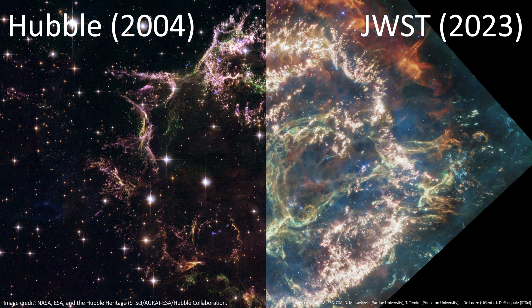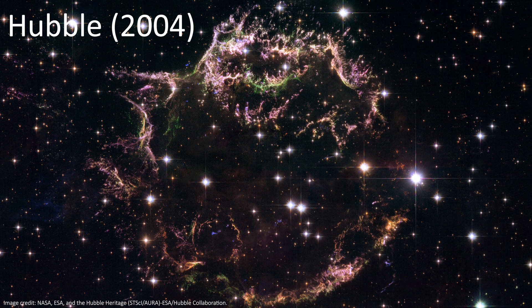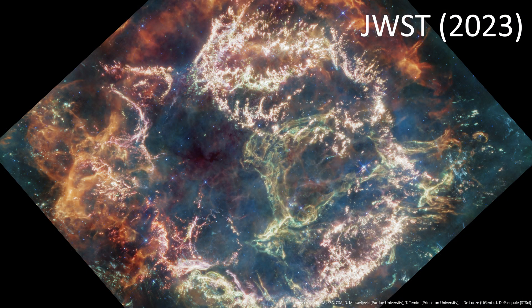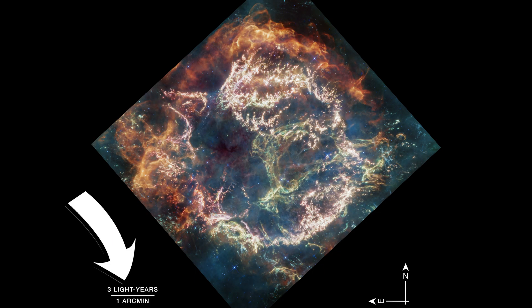You might think that it hasn't actually grown that much, given that the two images are more or less 20 years apart and the growth isn't crazy. But remember that this object is absolutely massive. This line here represents three light years, so the growth we're seeing here is actually millions of kilometers of growth.